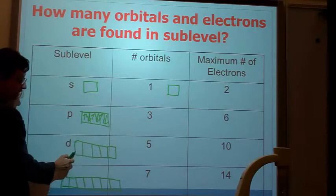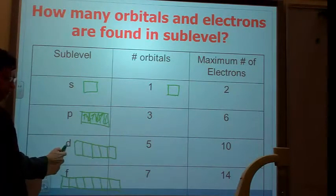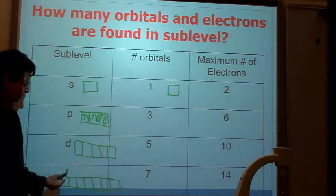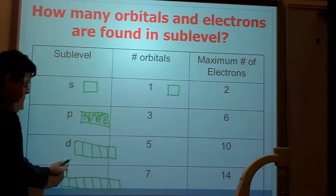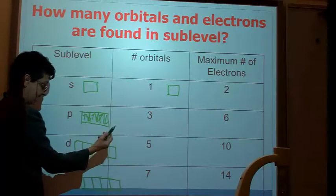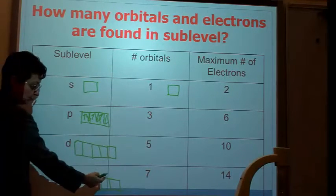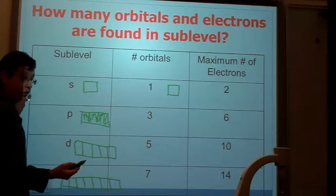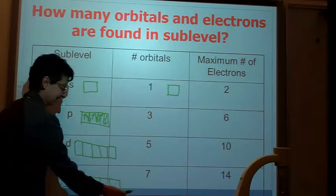And then, in the five orbitals of the D, we can have a total of ten electrons. You follow the logic here now. Two, four, six, eight, ten. And then, in this one, seven orbitals. So you can have 14 electrons.